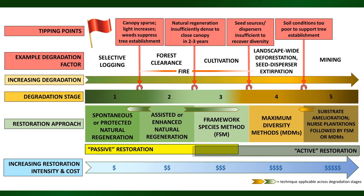Here's the whole concept in a single easy-to-understand diagram. We have the stages of degradation one to five and the responses to those stages. The tipping points, to remind you: the first is when weeds start to suppress seed establishment; the second is when there simply isn't enough natural regeneration to close canopy; the third is when there is insufficient seed dispersal to recover biodiversity; and the fourth is when even the soil becomes so degraded it cannot support many of the tree species we want to plant.